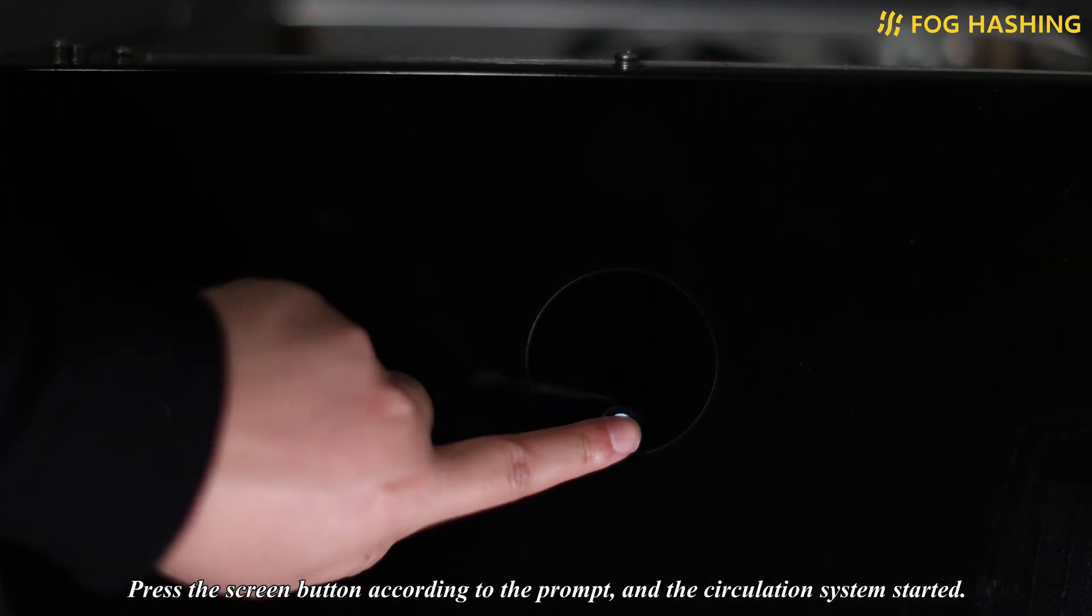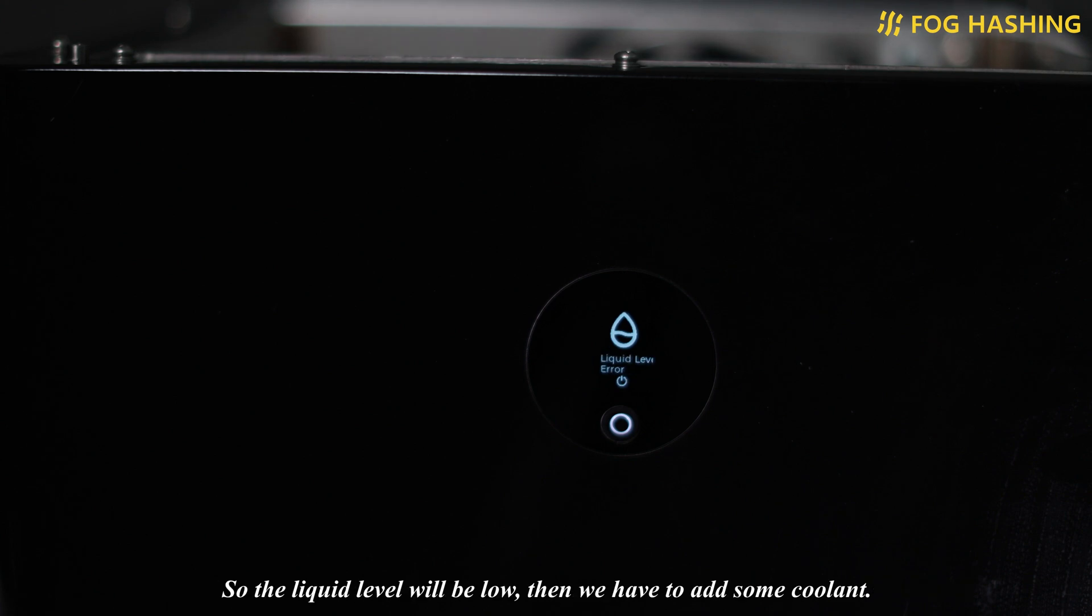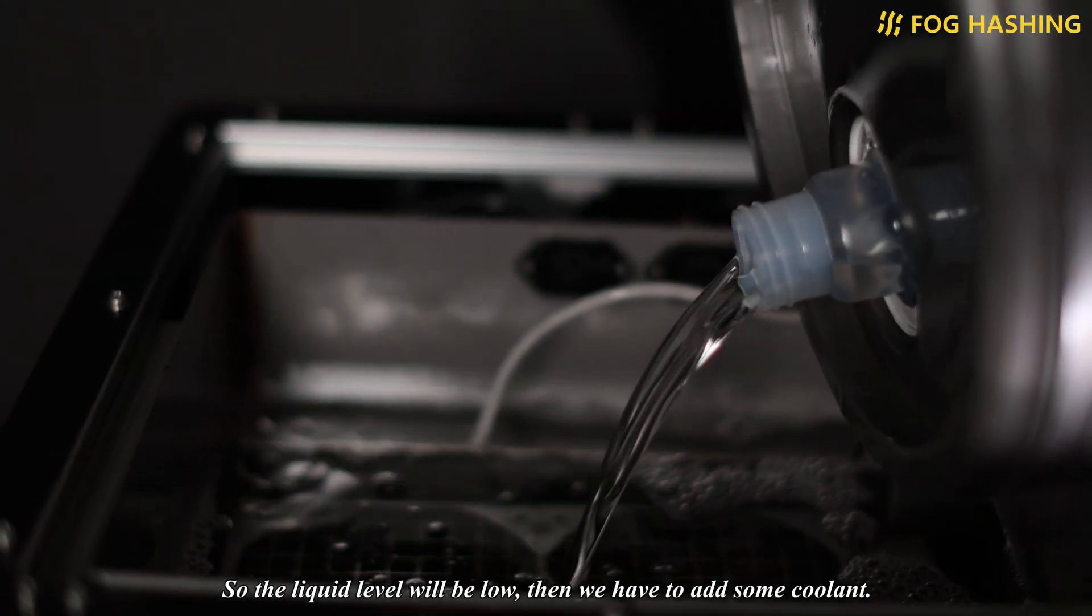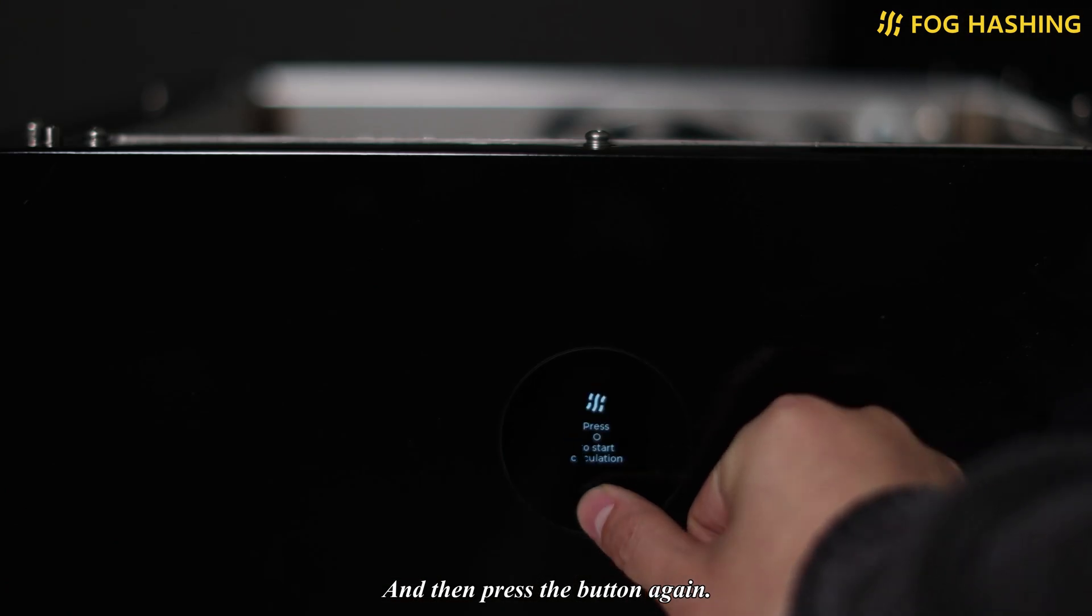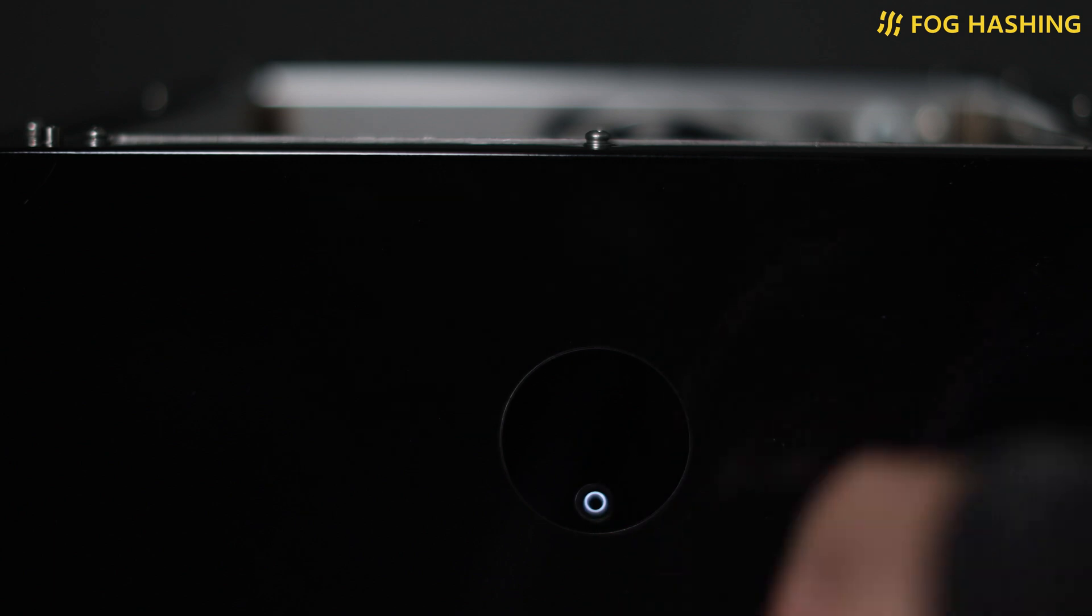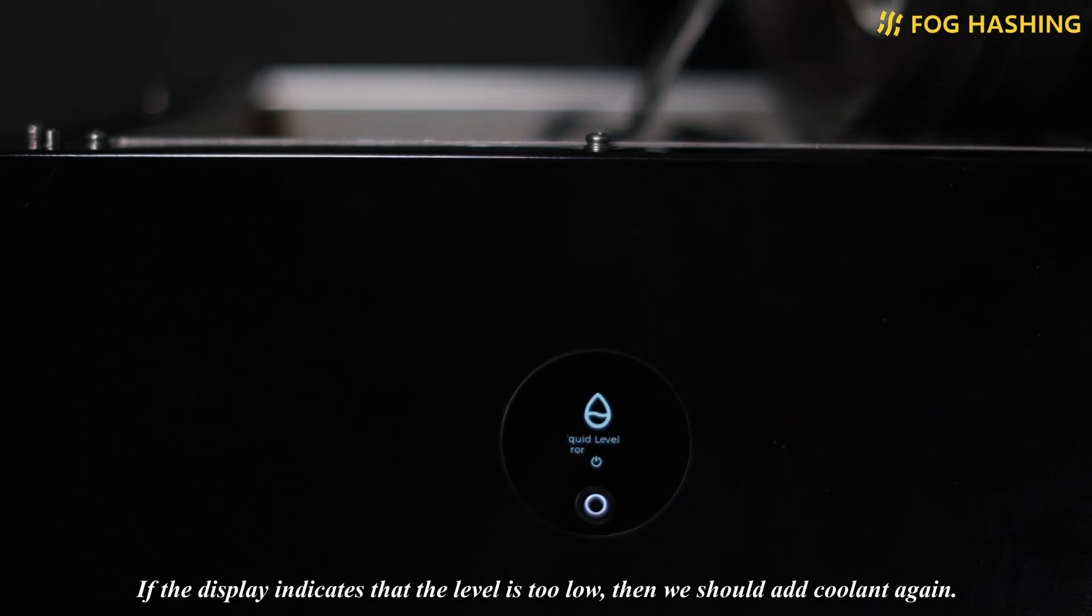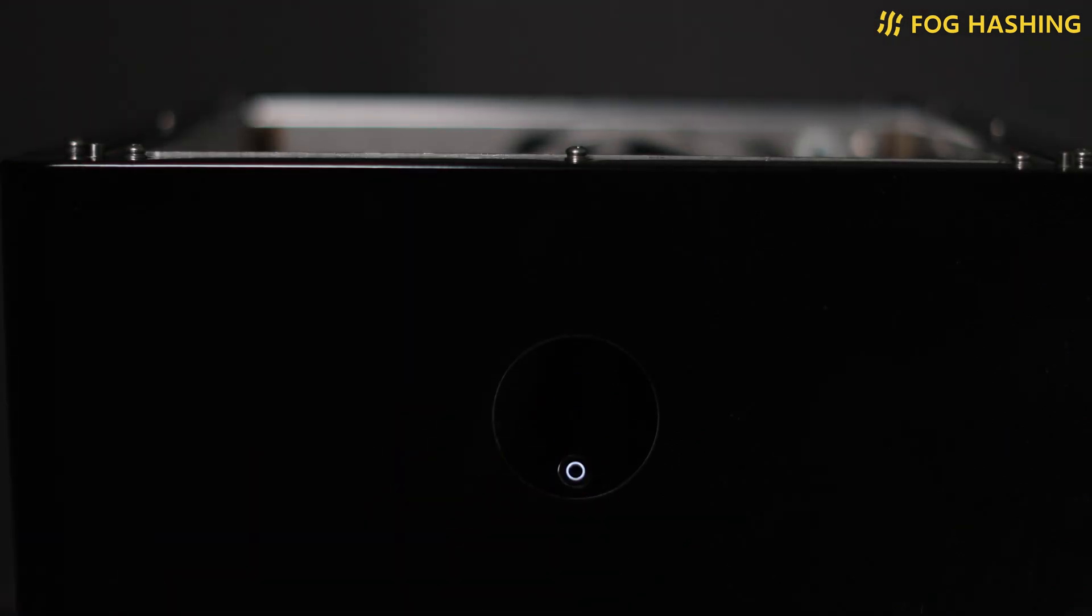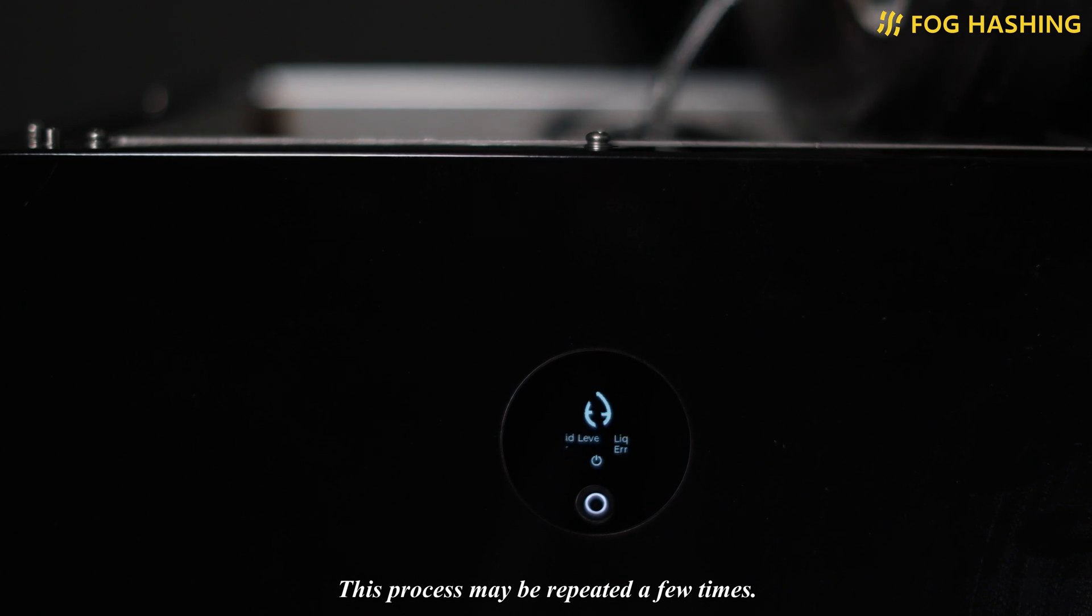The initial circulation process will transfer much coolant into the pipe and heatsink, so the liquid level will be low. Then we have to add some coolant and then press the button again. If the display indicates that the level is too low, then we should add coolant again. This process may be repeated a few times.